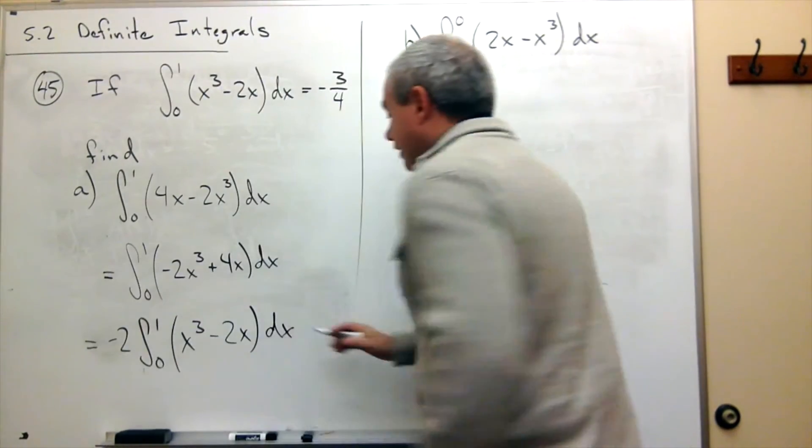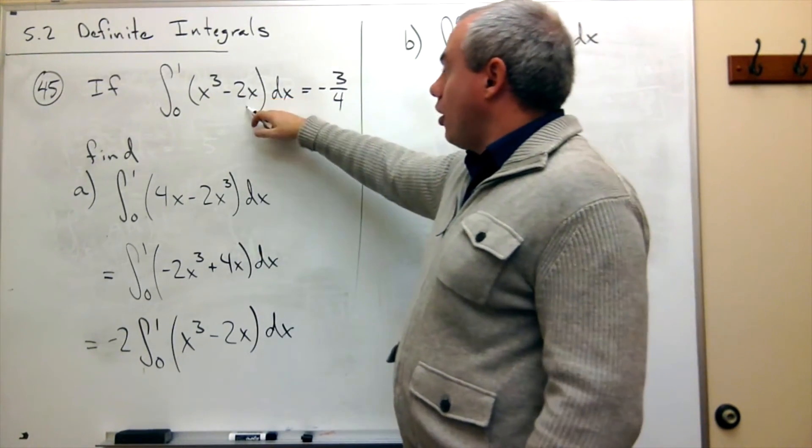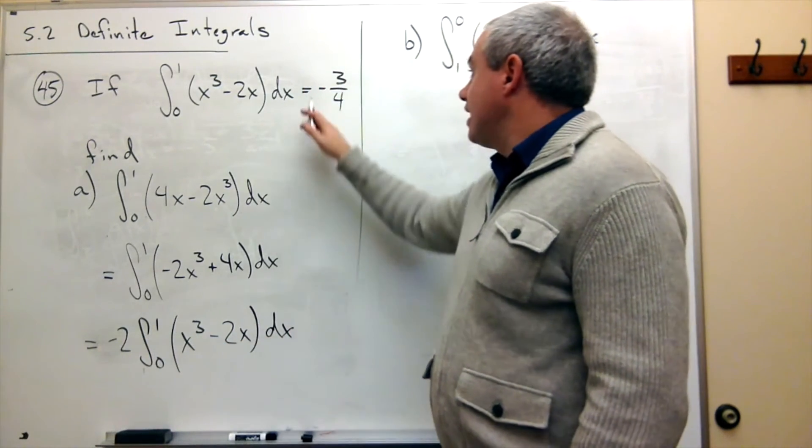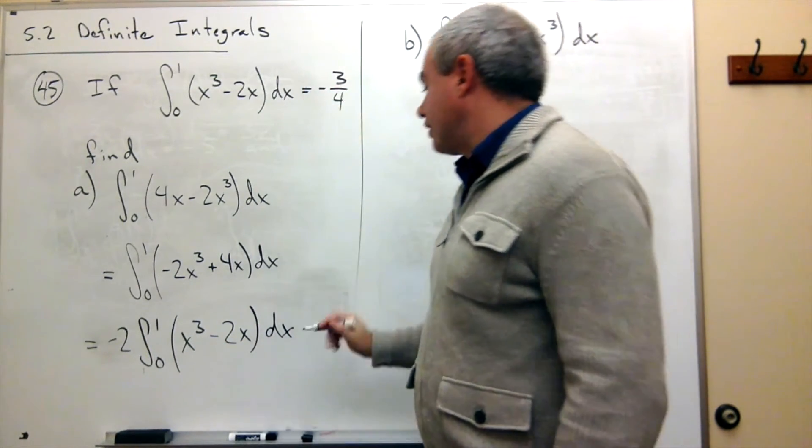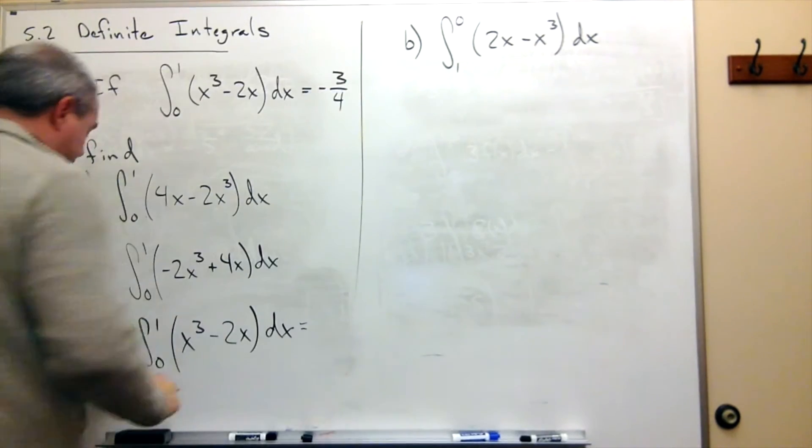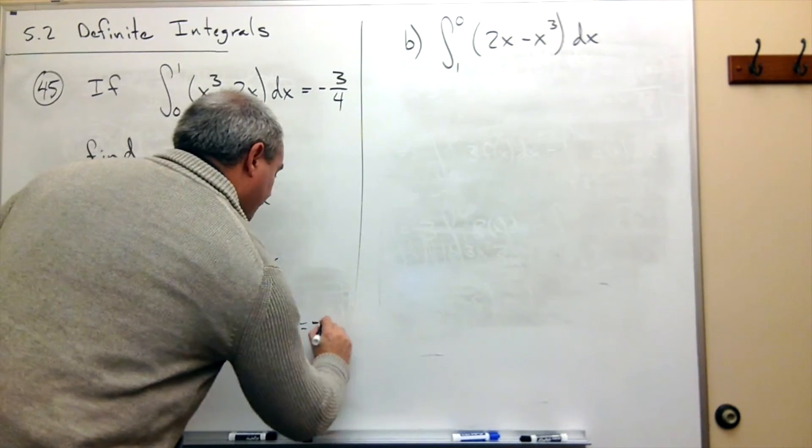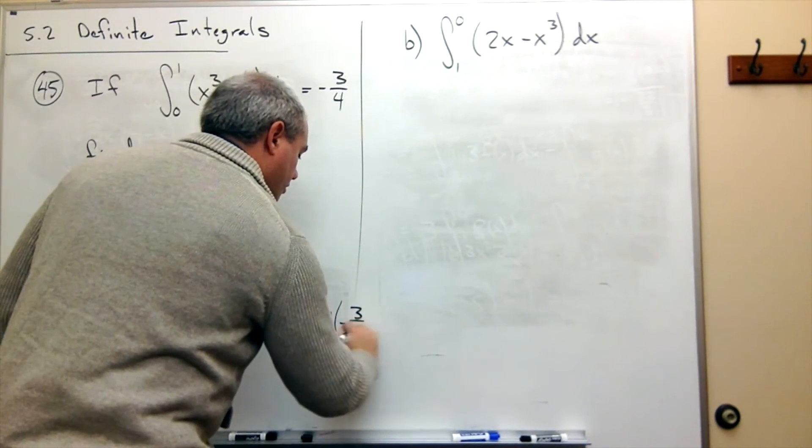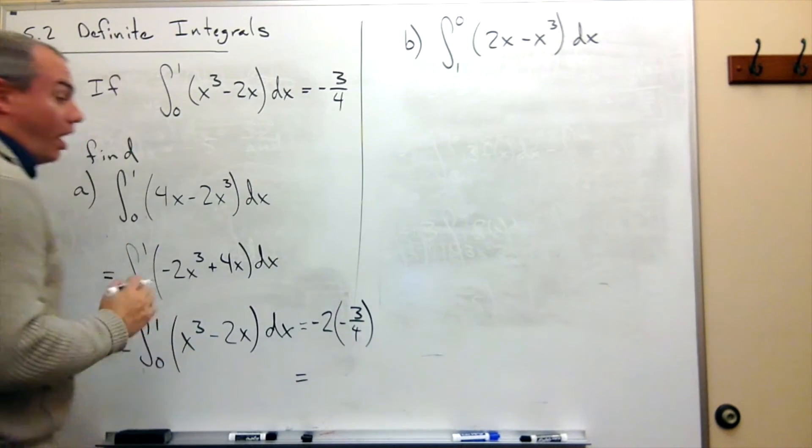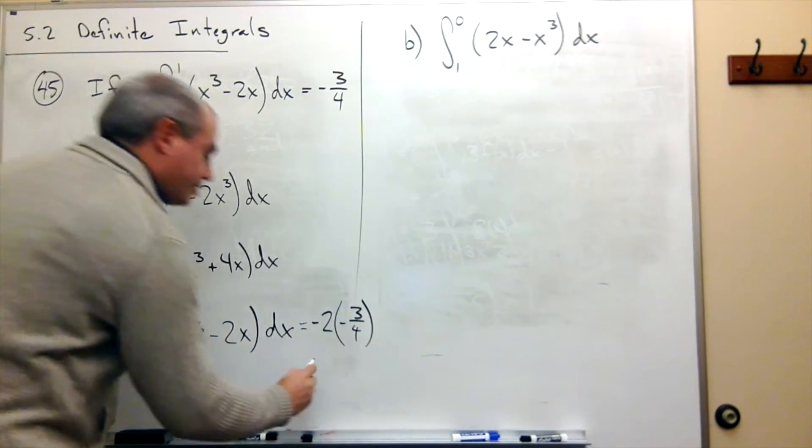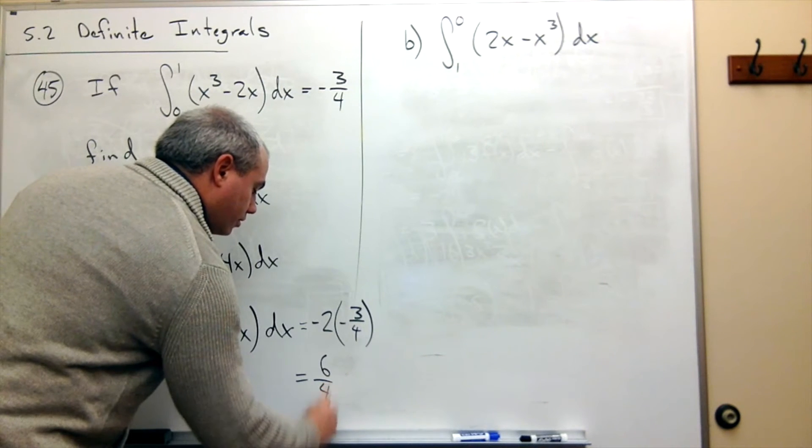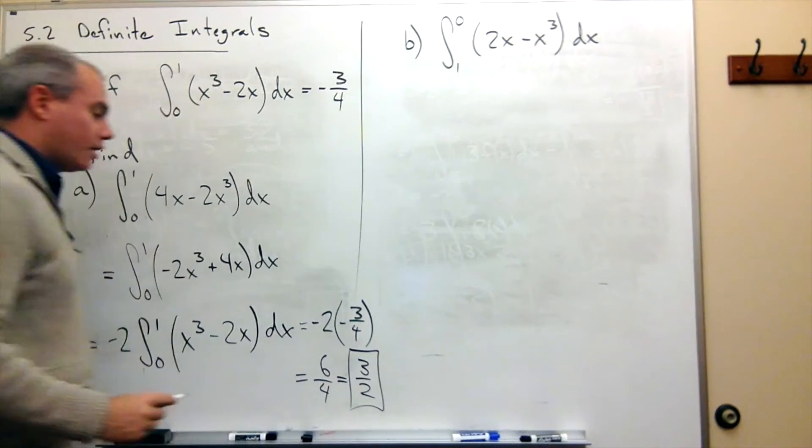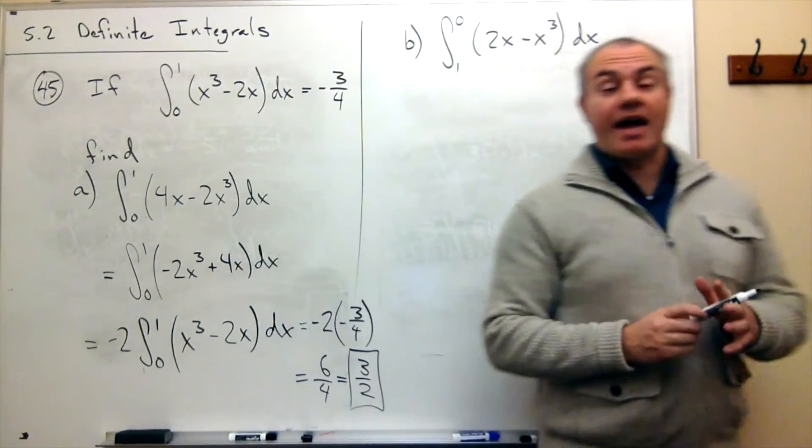And now if I look up here, that's exactly what I know. I know the integral from 0 to 1 of x cubed minus 2x dx, and I know that it's negative 3 fourths. So this ends up being negative 2 times negative 3 fourths, which would be positive 6 fourths. Or if you prefer, 3 over 2. So the answer to part A would be 3 halves.